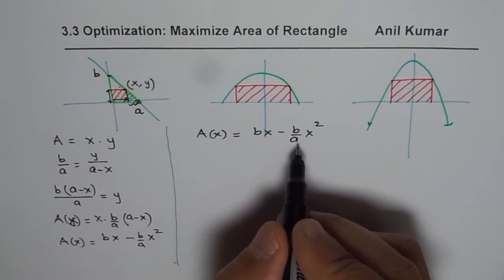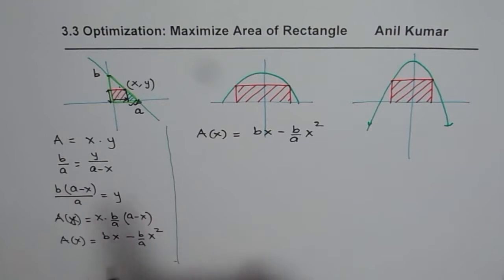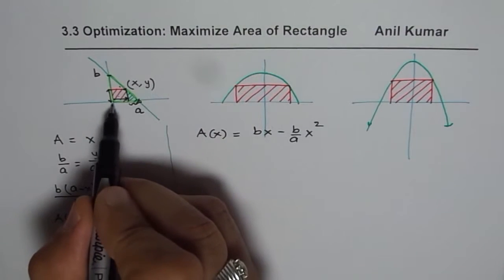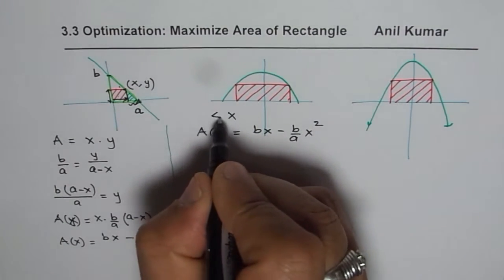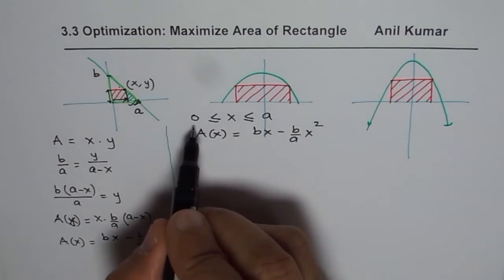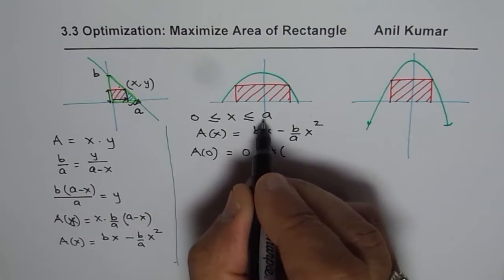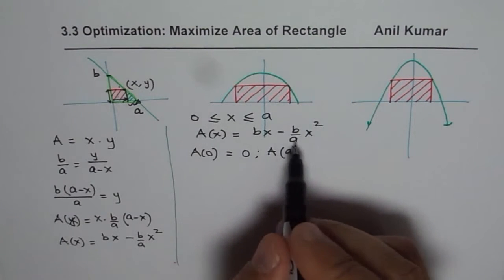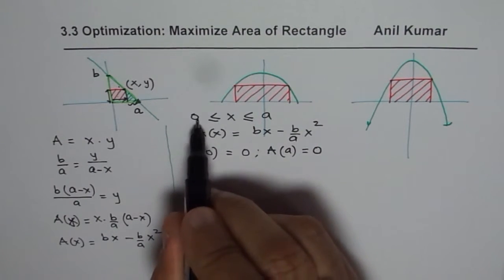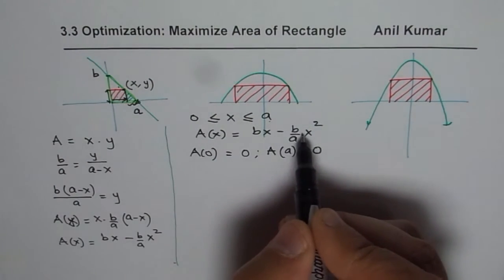To maximize, we need to find the critical point and also evaluate the function at the endpoints. The variable x can range from 0 to a. At x = 0, A(0) = 0, and at x = a, A(a) = 0 as well. Both boundary conditions give area 0. This means the critical number will give the maximum. It is a downward-opening parabola, so that critical point is indeed a maximum.